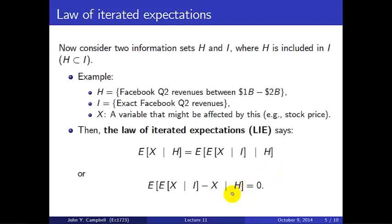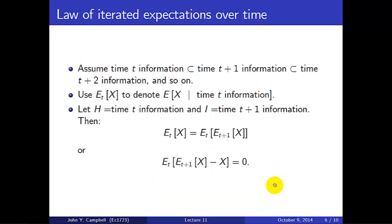And so this is predicting a mistake, and the law of iterated expectation says you cannot predict a mistake if you have less information available. You know that you will make a mistake, but you can't predict the direction. You're just as likely to be wrong in one direction as another. So on average, if you take the mathematical expectation, the probability weighted average of these mistakes, it's going to be zero.